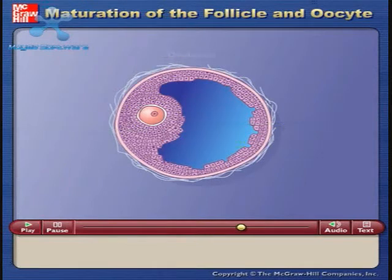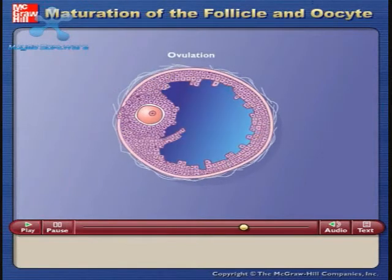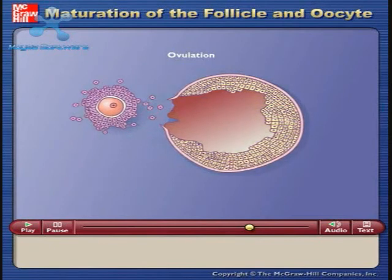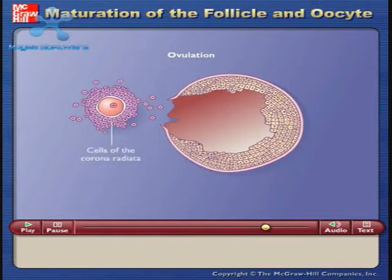During ovulation, the oocyte is released from the follicle along with some surrounding granulosa cells of the cumulus mass called the corona radiata.